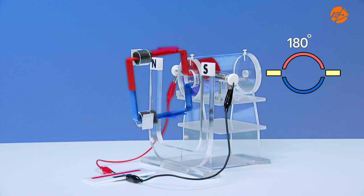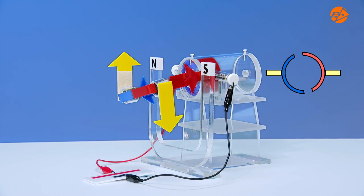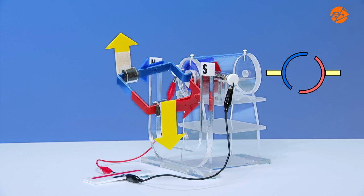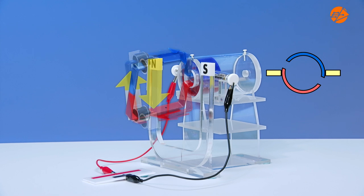At every 180 degrees, the split ring changes the current direction. This changes the magnetic force direction to ensure the continuous motion of the coil in the same direction.